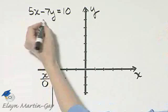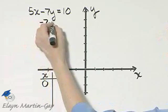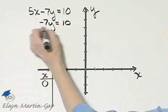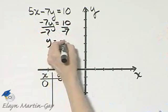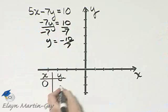If we let x be zero, that term is gone, and I have negative 7y is 10. Divide both sides by negative 7, and y is negative 10 sevens, negative 10 over 7.